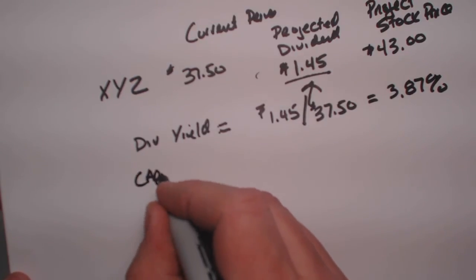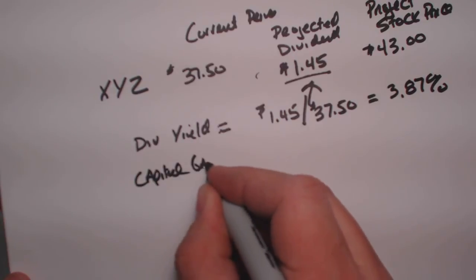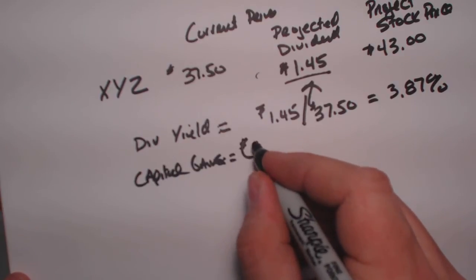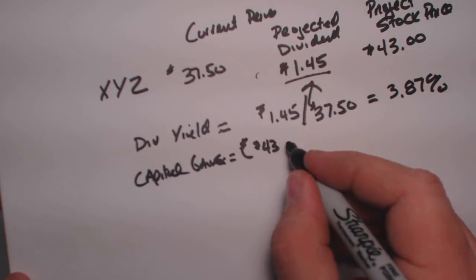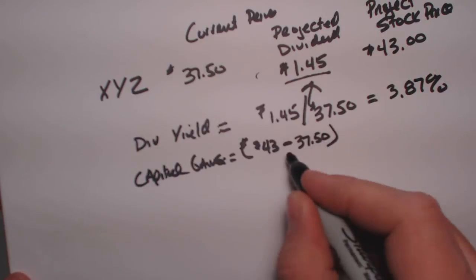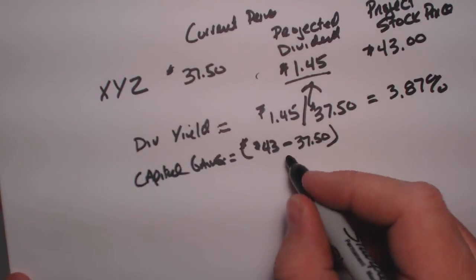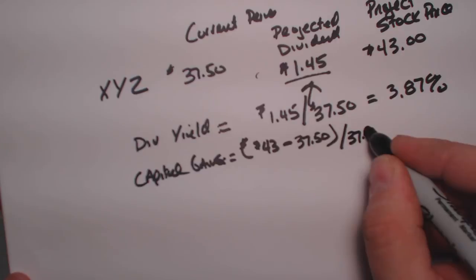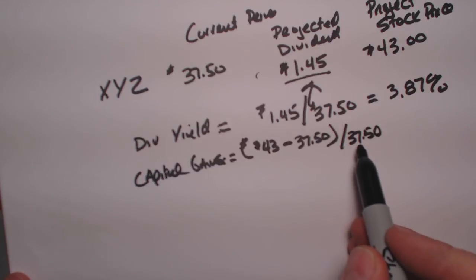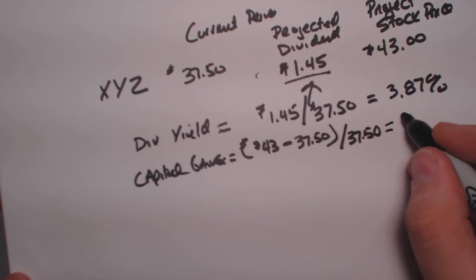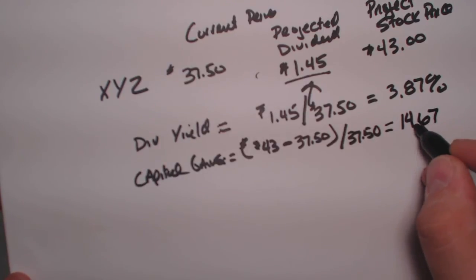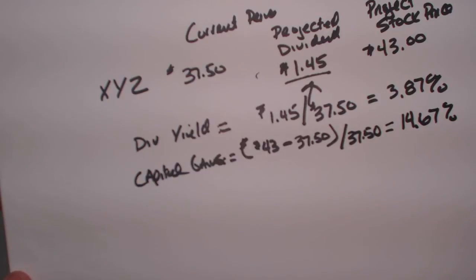Then we have the capital gains yield. It's going to be the selling price of the stock, $43, minus the cost, $37.50, and we divide that by $37.50, what we started with. So we're taking the profit over the cost. Capital gains is essentially a profit number, and the answer is 14.67%.